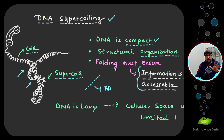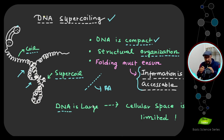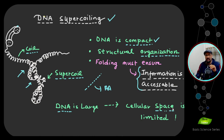That is why the organization is more defined when we talk about DNA supercoiling, unlike telephone wires which are not that organized. DNA is a large, linear, long molecule that needs to be packed in the smallest space possible since cellular space is limited — that is why it exists inside the cell in the supercoiled state.